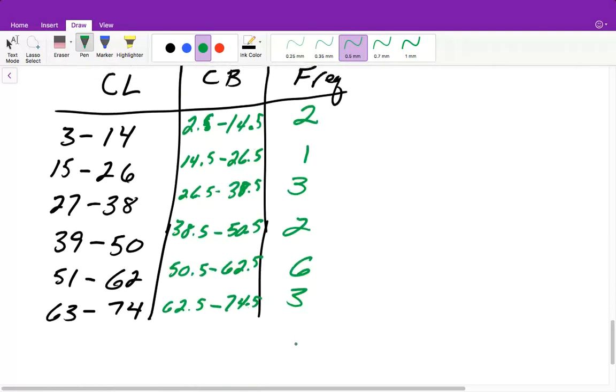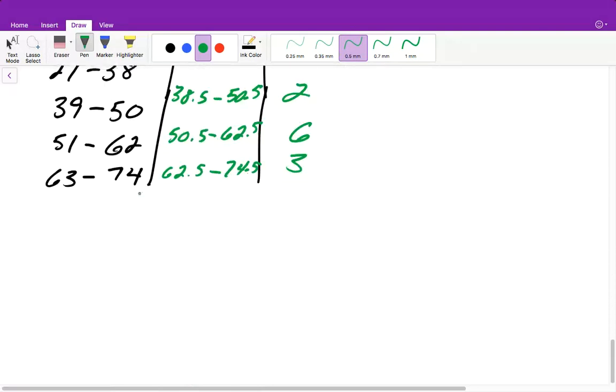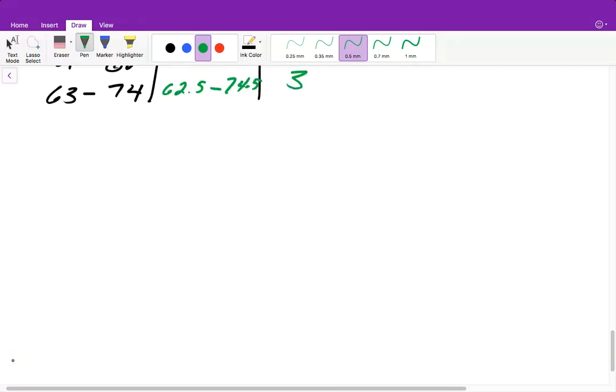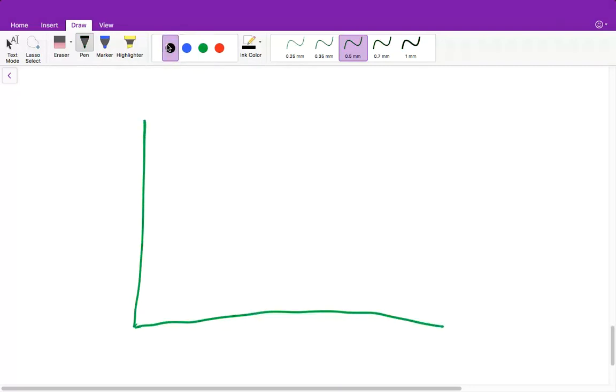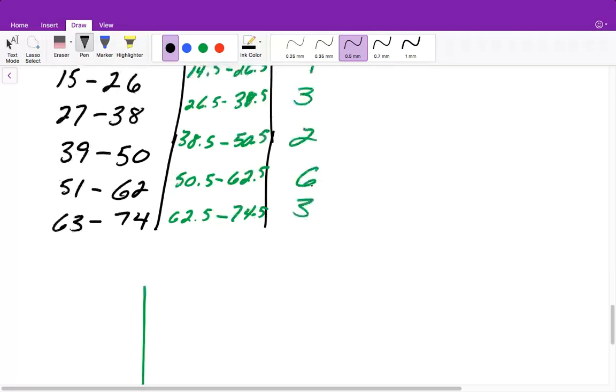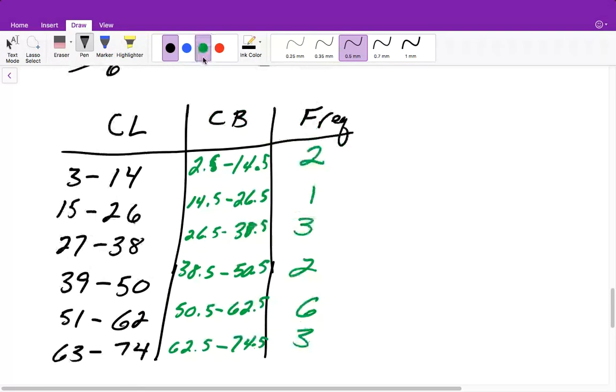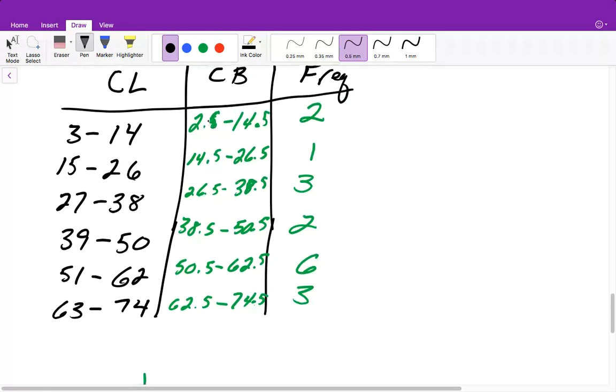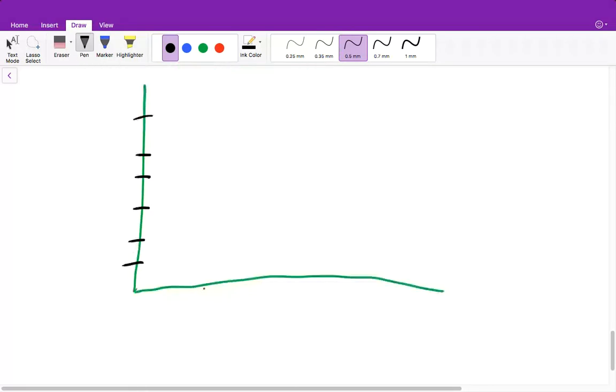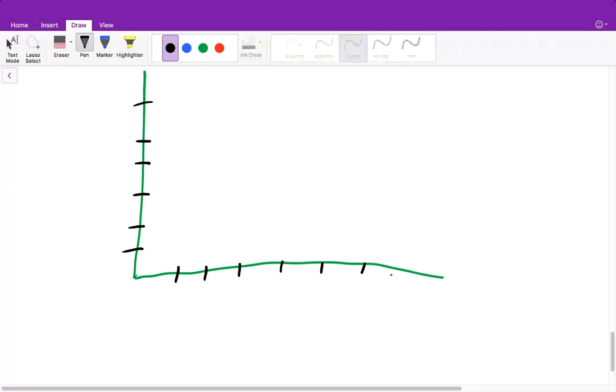And now we go ahead and we create our histogram. So remember our y-axis is always going to be our frequency, which in this case, we go 1 to 6. So I'm just going to count 1, 2, 3, 4, 5, 6. And then our x-axis is always our class boundaries. So then we would have 1, 2, 3, 4, 5, 6, 7. All right, now let me fill this in.